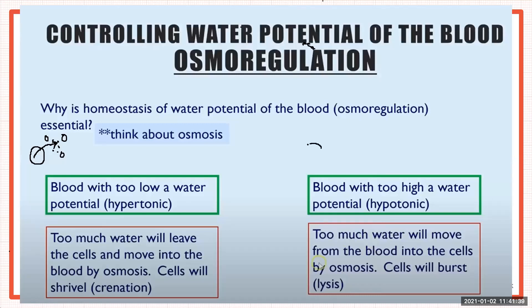In the second situation, when the blood is hypotonic, we have more water compared to solutes. Too much water will move from the blood into the cells, because water flows from a region of high water potential to a region of low water potential. As a result, the cells will swell and may actually burst. In a hypotonic situation, water moves from blood into cells; in a hypertonic situation, water moves from cells into blood.